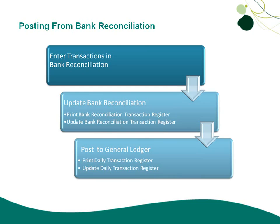Posting in Bank Reconciliation follows the same process as in other modules. After you enter the transactions, you print the Bank Reconciliation Transaction Register and update the Register to update the Bank Reconciliation module. Then you print and update the Daily Transaction Register to update the General Ledger module. All these steps are done from within Bank Reconciliation.